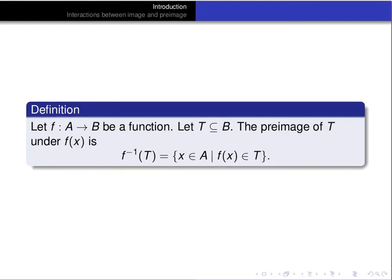The pre-image of a subset T of B — the pre-image of T under f — is defined to be the set of all x in A such that f(x) is an element of T. One important note is that the pre-image notation does not imply that the function f has an inverse. This is the notation for the pre-image of a set, regardless of whether or not the function f has an inverse.